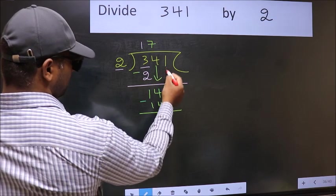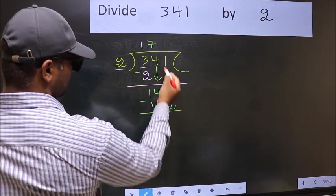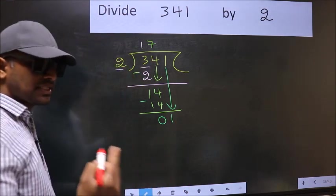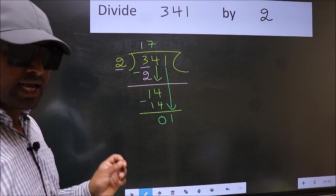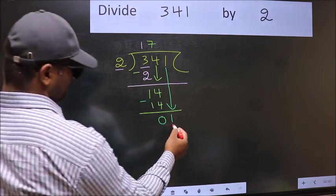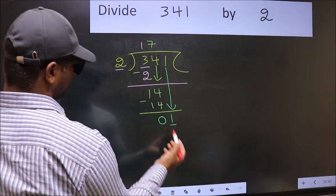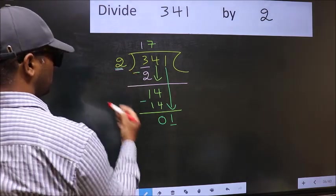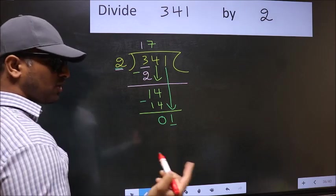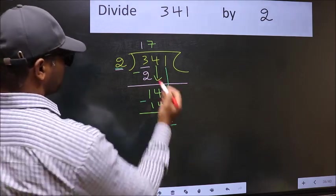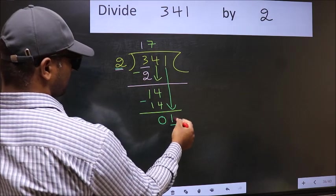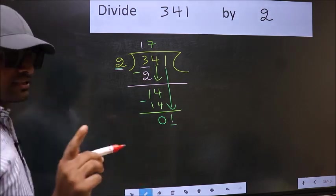Now you bring down the beside number. So 1 down. After this step, the mistake happens. And the mistake is this. Here we have 1 and here 2. 1 is smaller than 2. So what many do is they put a dot and take 0 here, which is wrong.